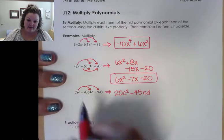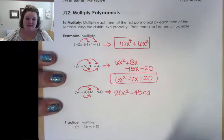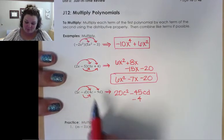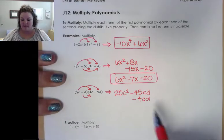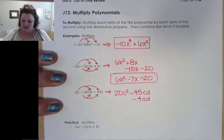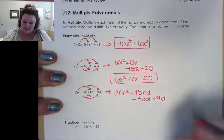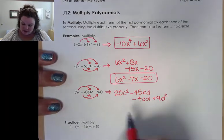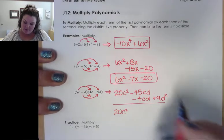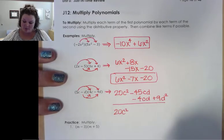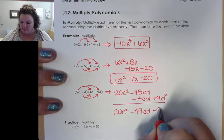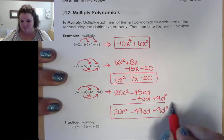And now we need to distribute this negative d. So negative d times 4c is going to be negative 4, and then again, we're going to have a d and a c. I'm going to write it in alphabetical order, so cd, which makes it a like term with the last term that I wrote. And then negative d times negative 9d is going to be a positive 9d squared. And then we just draw our line and combine our like terms. So we have our 20c squared. When I combine negative 45 and negative 4, I get negative 49cd and my plus 9d squared.